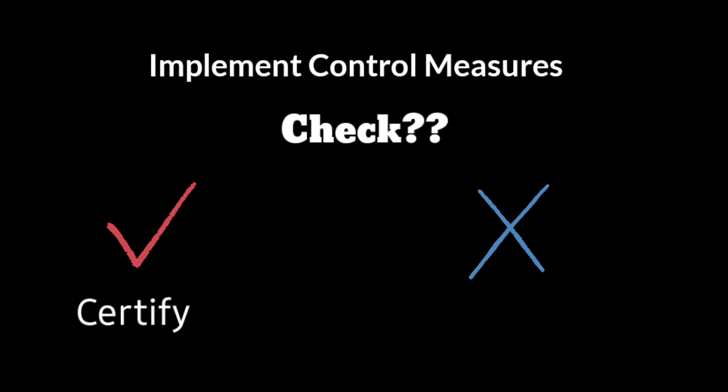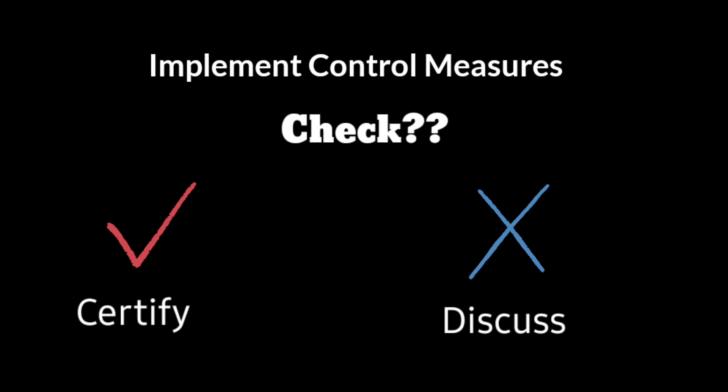If it is not acceptable, again you have to discuss what are all the further corrective and control measures that can be taken to reduce that risk score. This is the basic process involved in framing the safety management system.